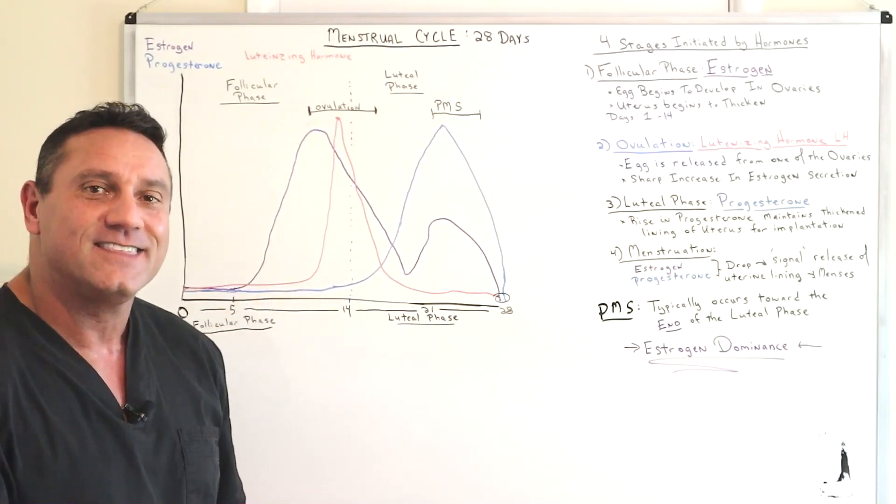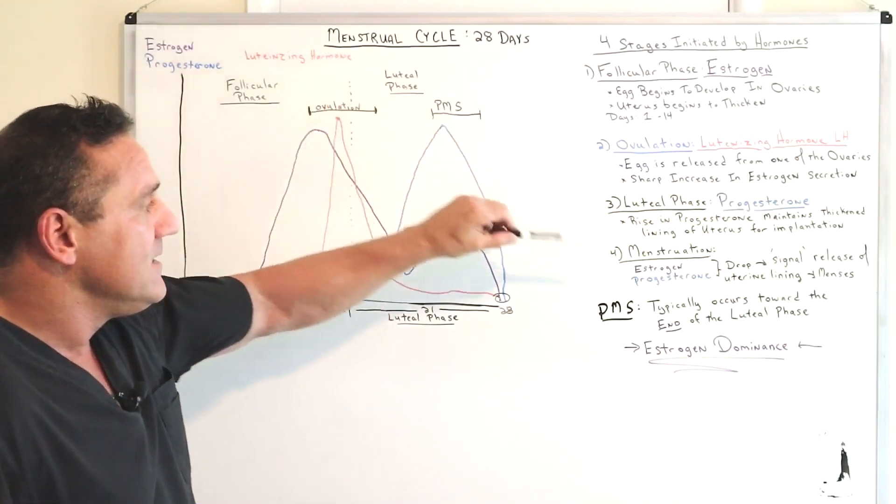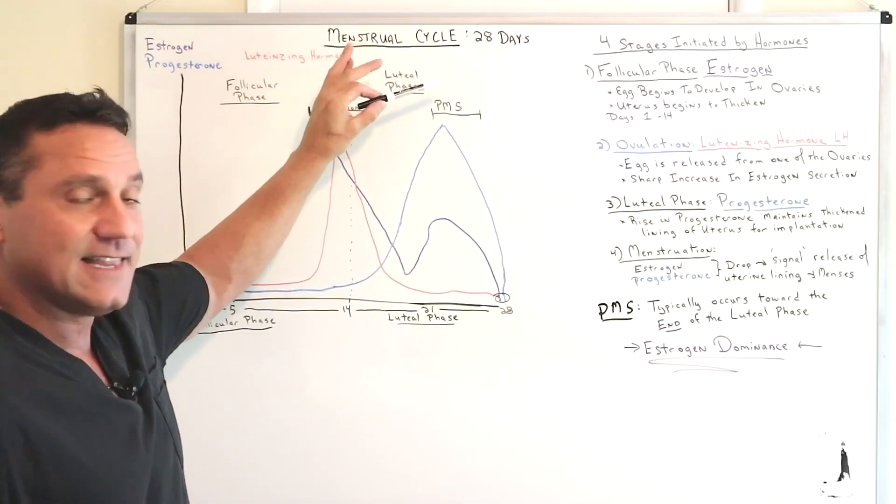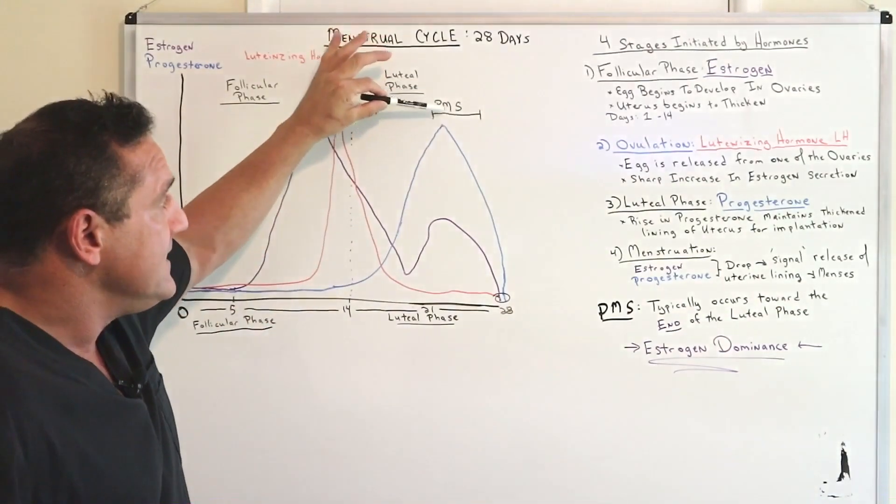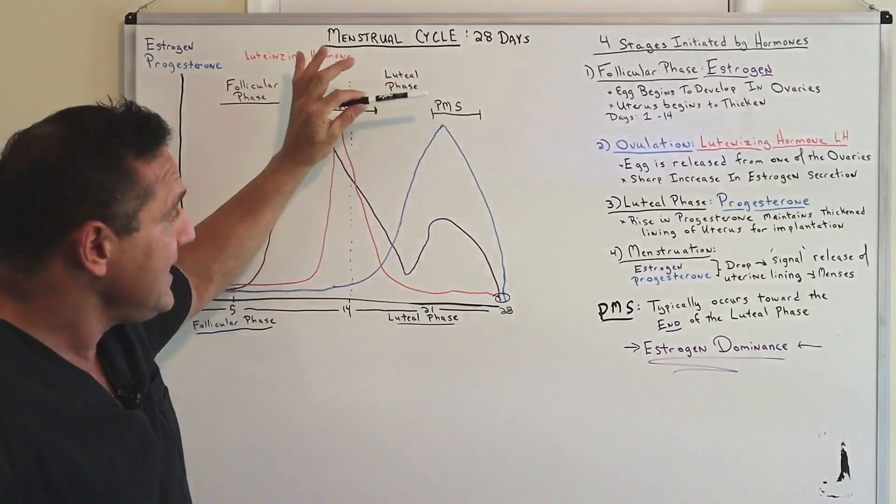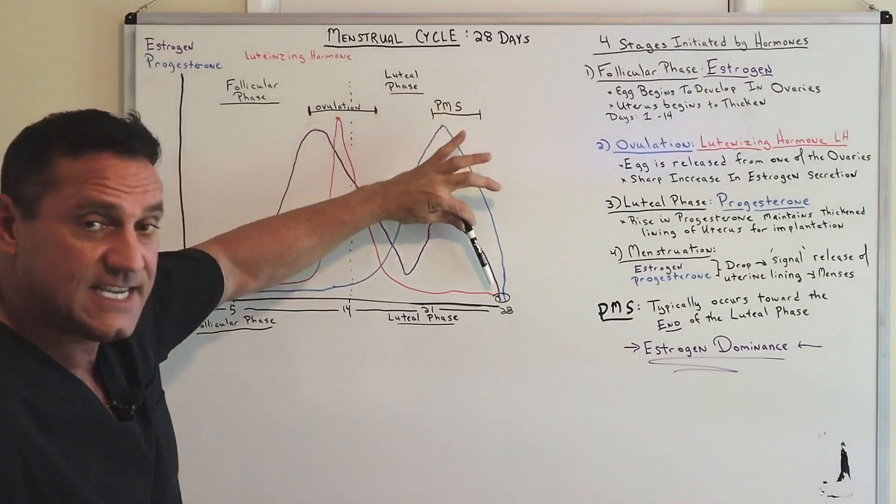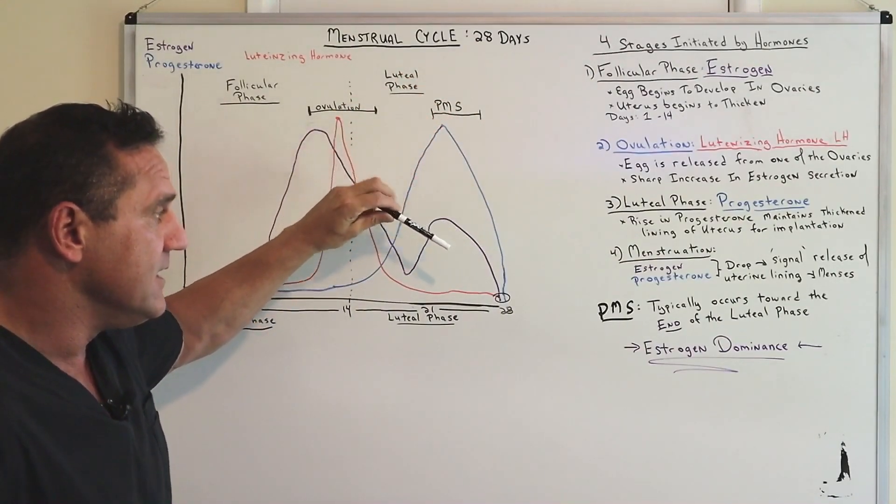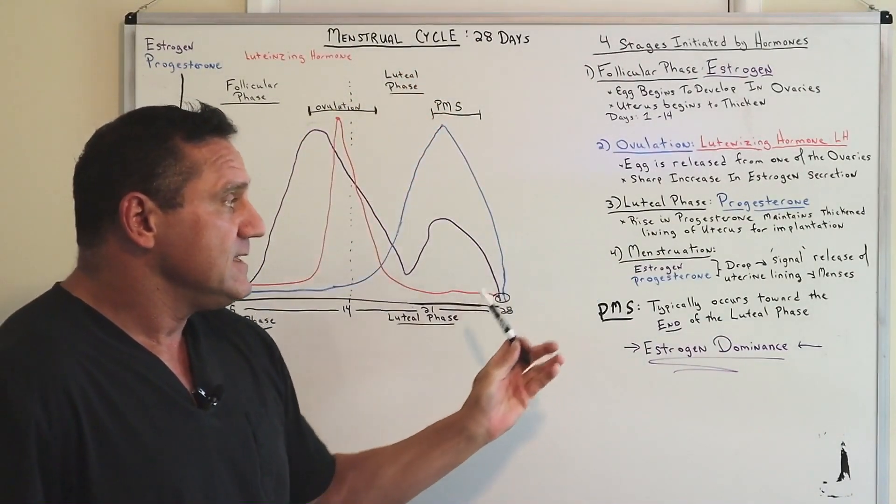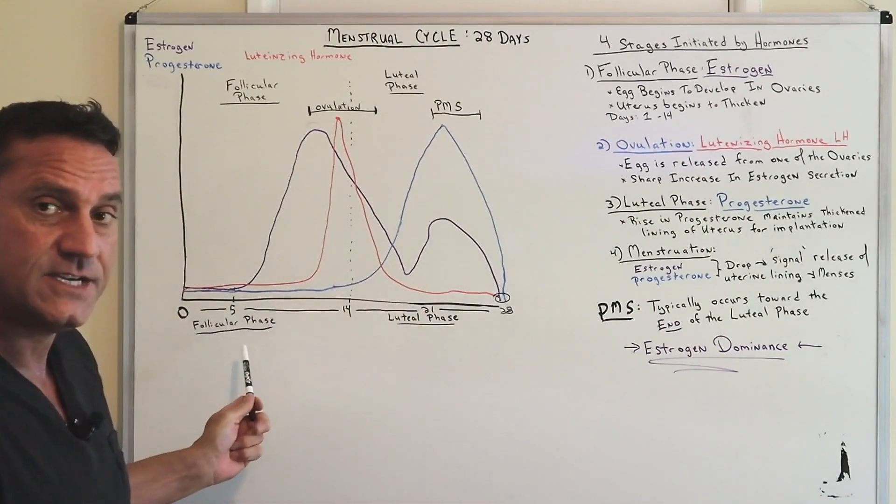So let's say nothing happens. And then by the last days, like days 25 to 28, this is where PMS occurs. Why? Because you have a sharp decrease in both the hormones, in progesterone and estrogen.